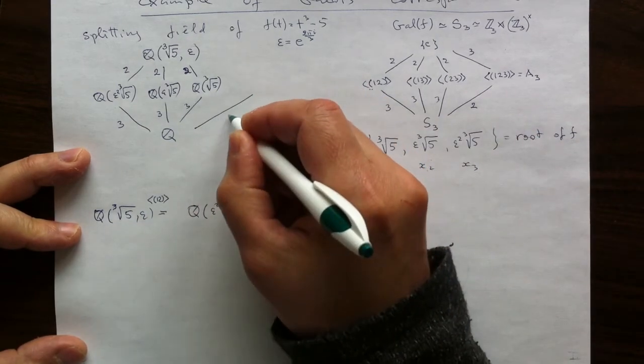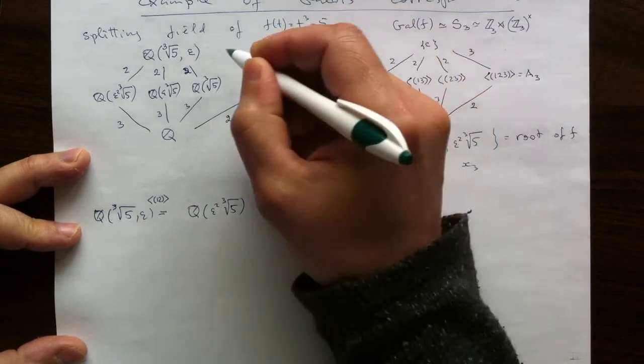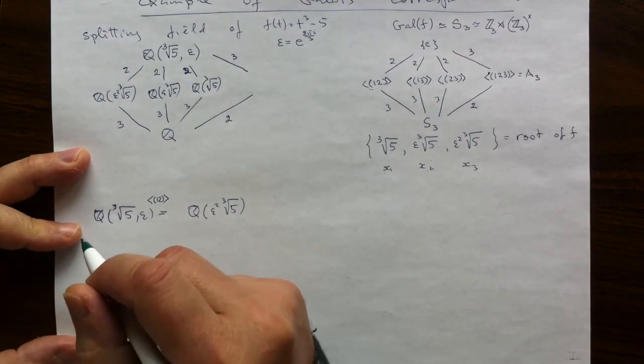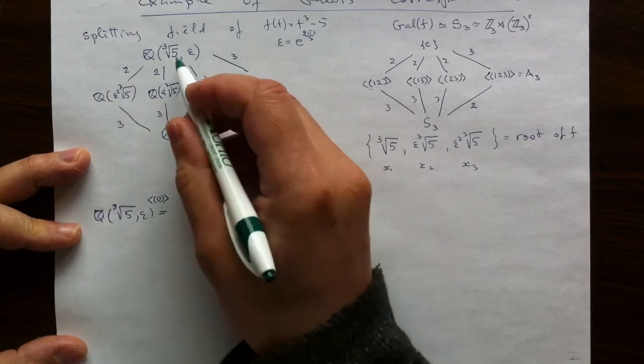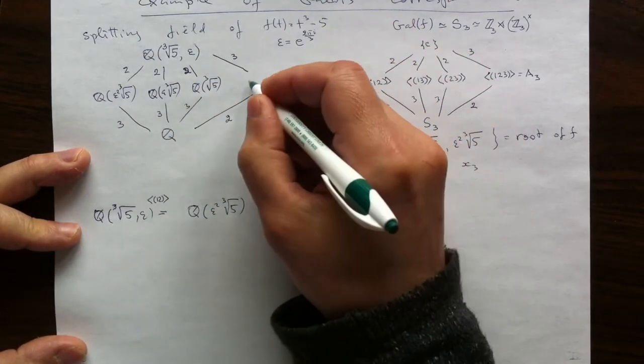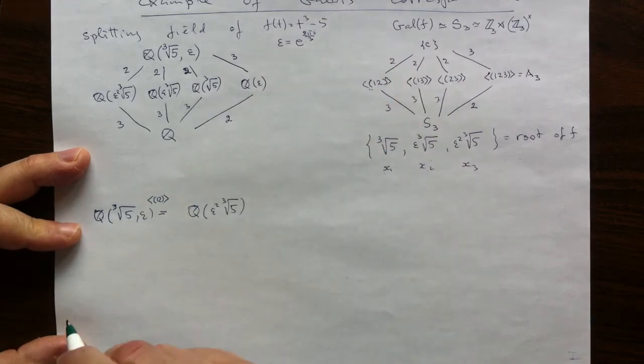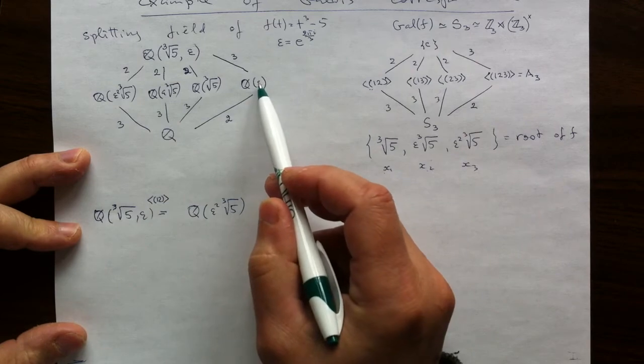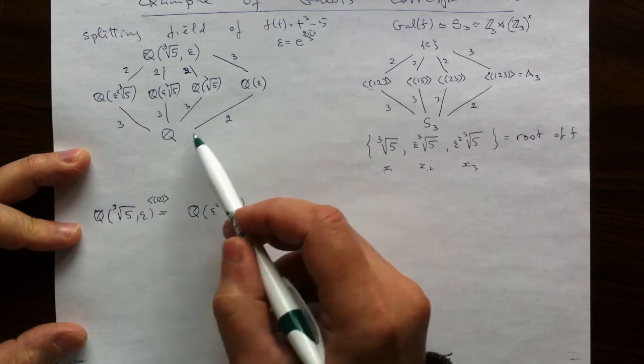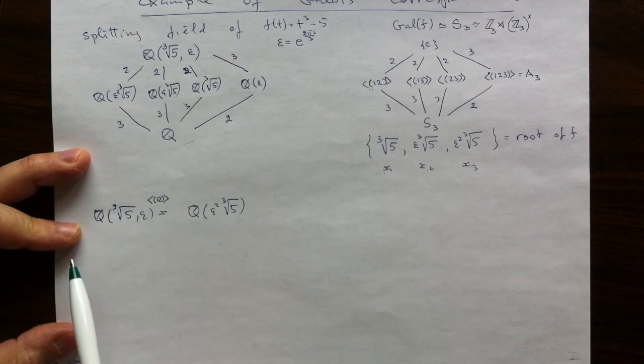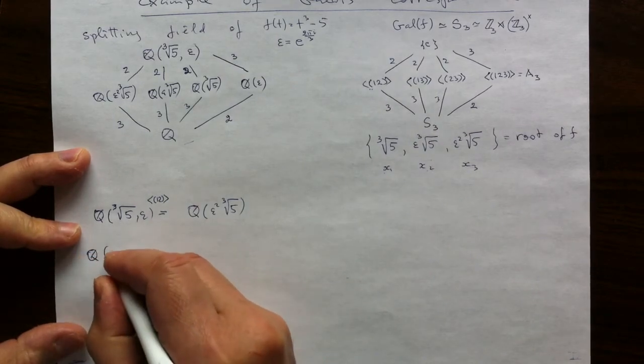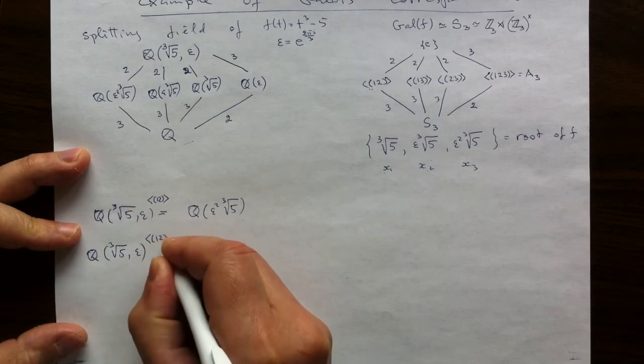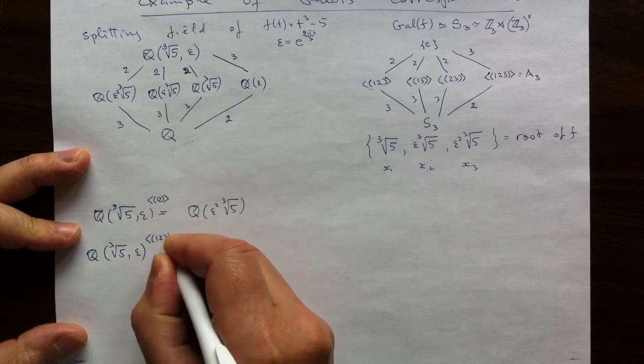And we do have degree 2 subfield inside if we just take epsilon. So this is a guesswork. This is not really running the Galois correspondence, but it is a subfield and it is the only missing one and it is the subfield. So that must be it. That must be this subfield of invariants. Degree 2 field, subfield of invariants with respect to A3.